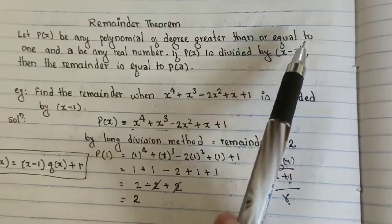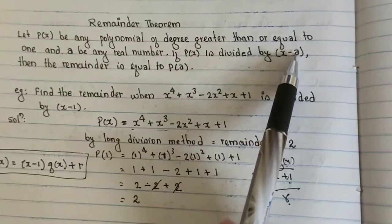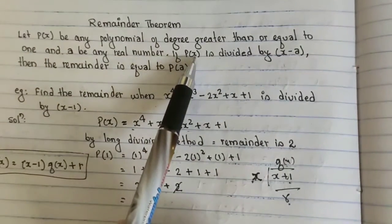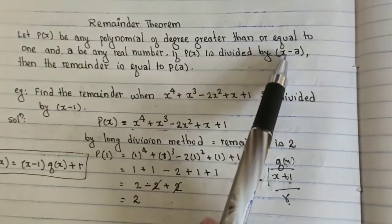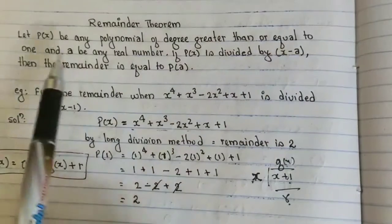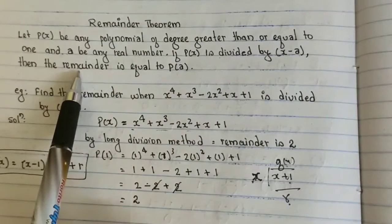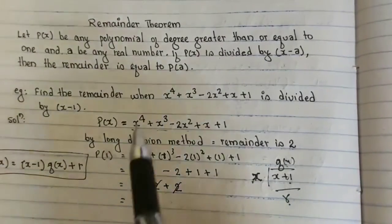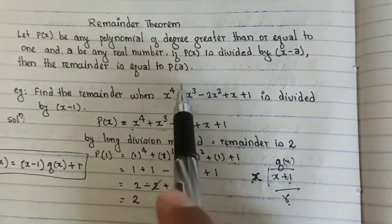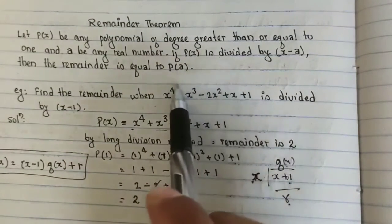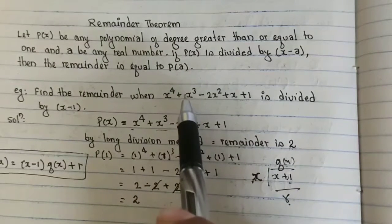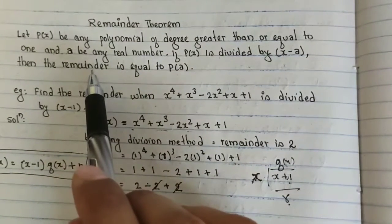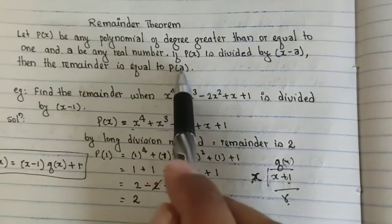Here this is divisor. So here this a be any real number. If P(x) is divided by (x - a), then the remainder is equal to P(a). This means, according to this, if your polynomial equation whose degree is greater or equal to 1, if you divide by this, then the remainder that you will be getting will be P(a).